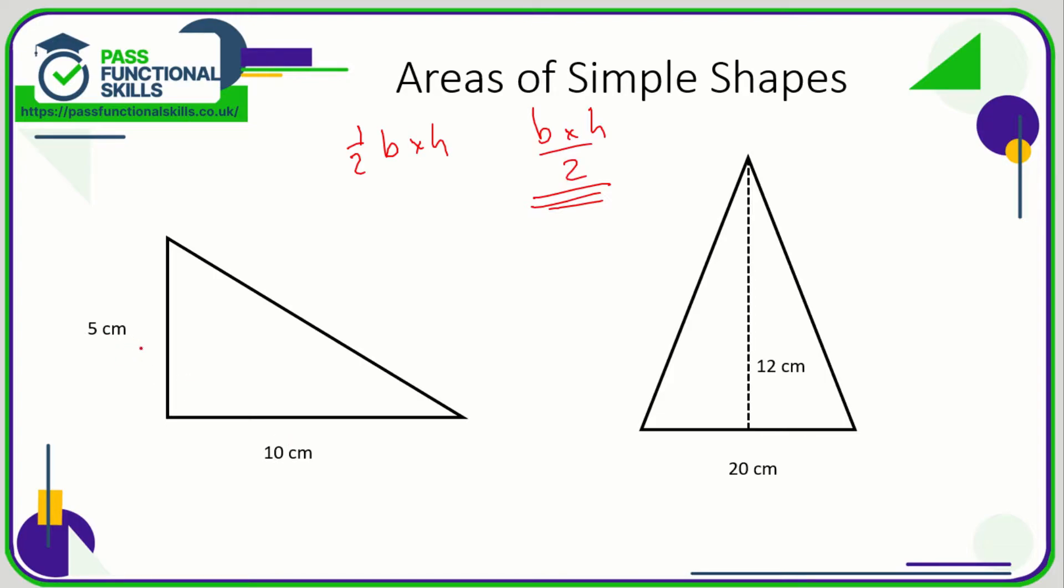And the reason this formula works is because 5 times 10 would give you the area of the rectangle, and the triangle is exactly half of the rectangle.